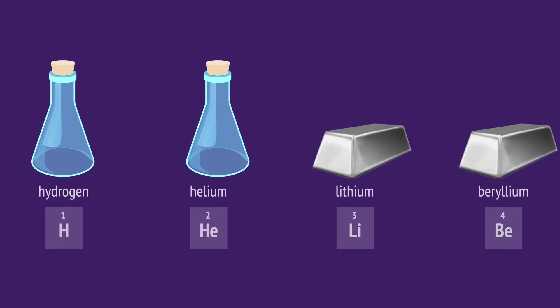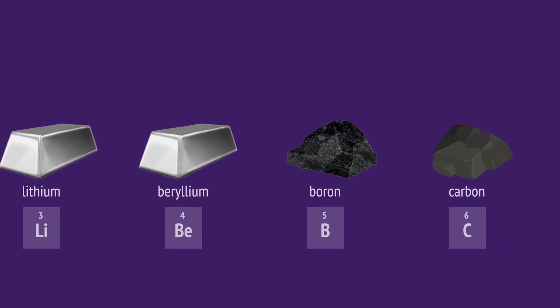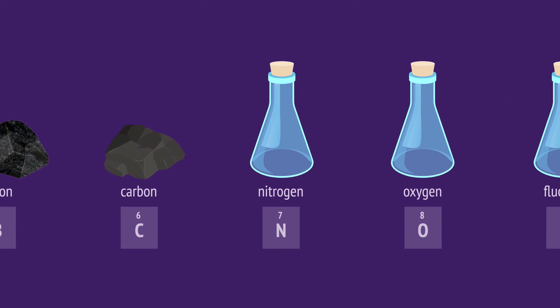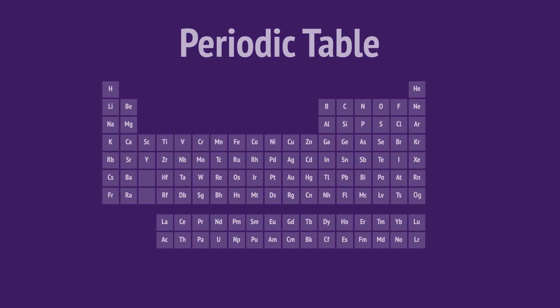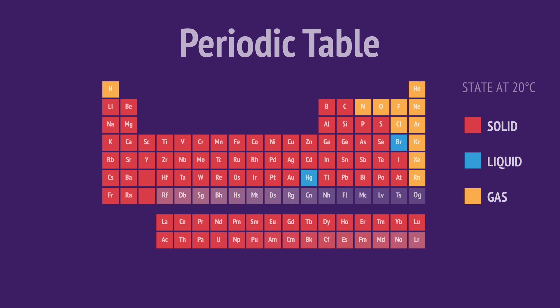There are 118 different types of elements, and so 118 different types of atoms which are organized in the periodic table. At room temperature, most elements exist as solids. Only two are liquids, bromine and mercury, and the rest are gases.